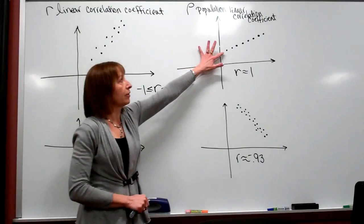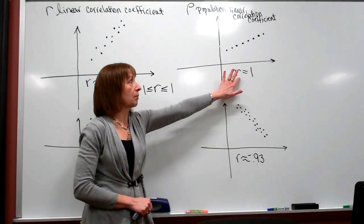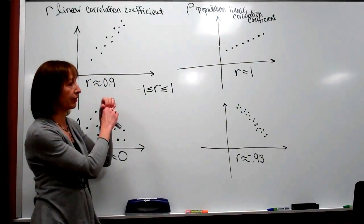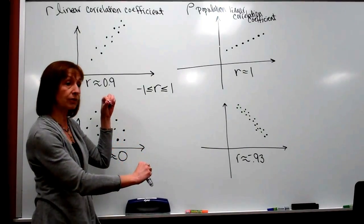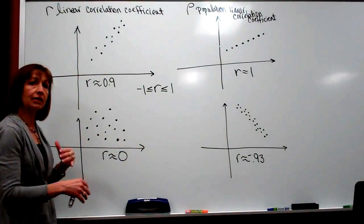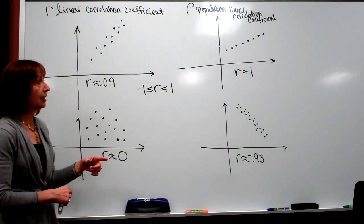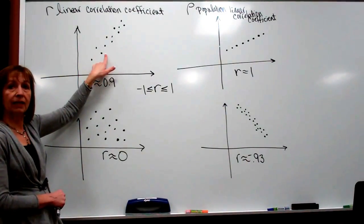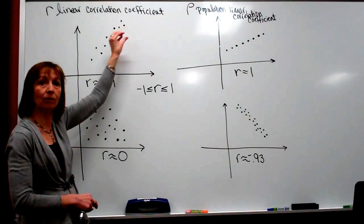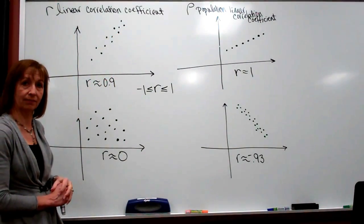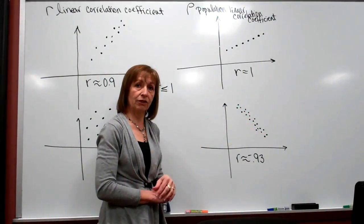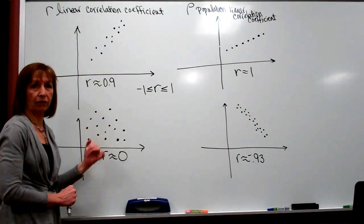As the dots are tighter against what a line would be, the closer your value is to positive 1 if the trend goes up, or closer to negative 1 if the trend goes down — that means we have a high linear correlation. If the data is more scattered, it's a low or no linear correlation. So the first diagram is a positive and high linear correlation; the fourth is a negative but high linear correlation; and the third has no linear correlation between the variables.